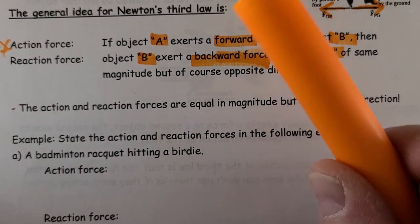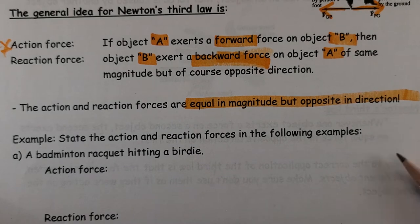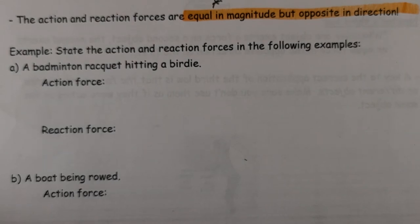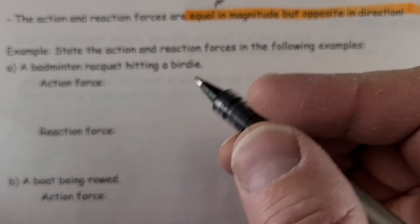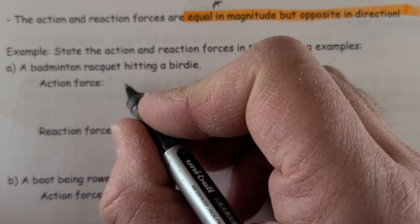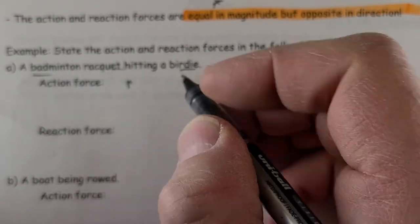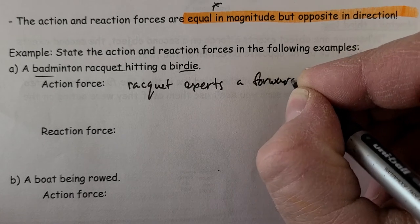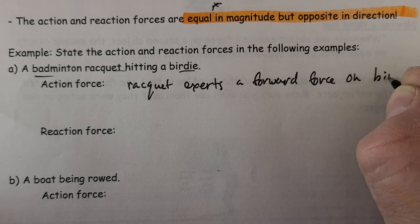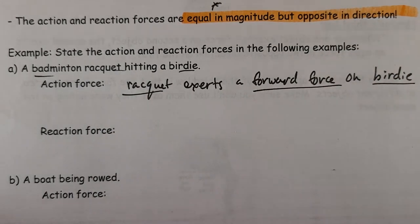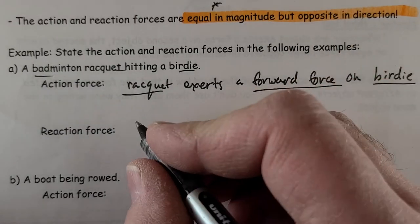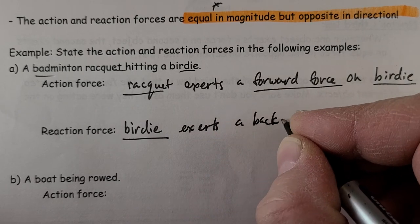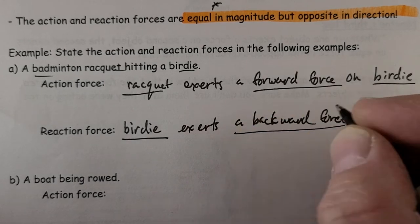So the action and reaction forces are equal in magnitude, so equal in size, but of course opposite in direction. So you may want to put a little star there as well. So if we look at a bunch of scenarios here, we should be able to indicate an action force and a reaction force. So the first one, a badminton racket hitting a birdie. So of course the action force is kind of the force that we want to have happen. So we'll call, let's see, so racket, so our objects are racket and birdie. So racket exerts a forward force on birdie. So we have our two objects, and we have our force and its direction. So if we just change those around, birdie, instead of exerting a forward force, do the opposite. Exerts a backward force on the racket.